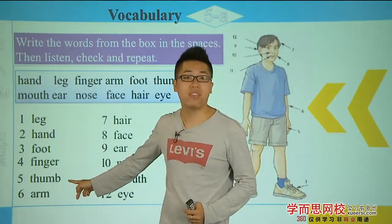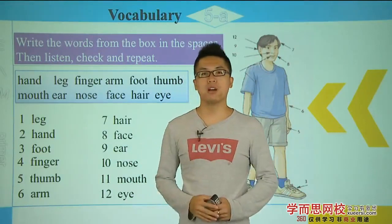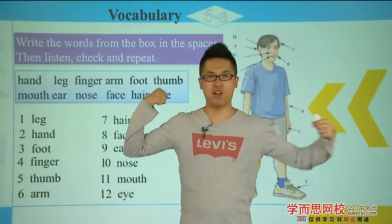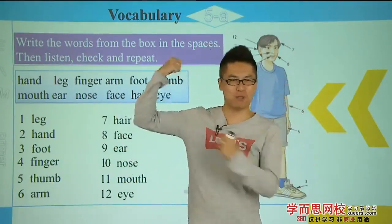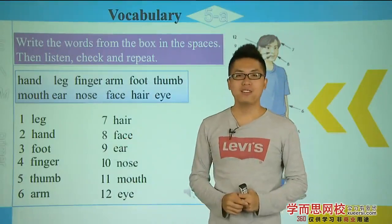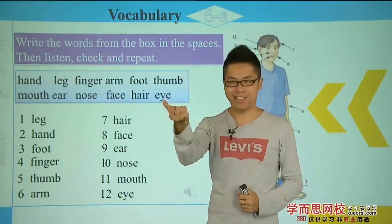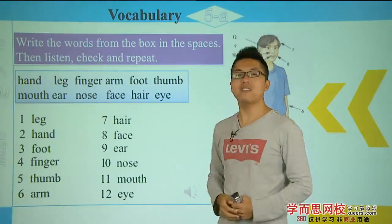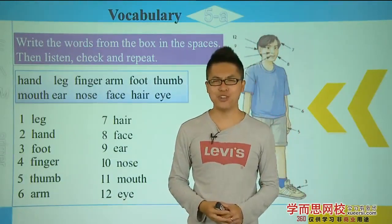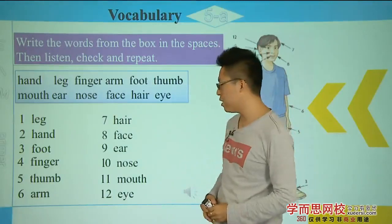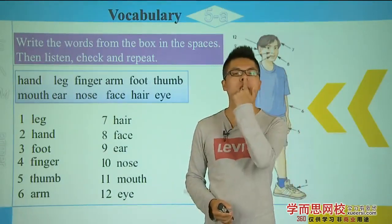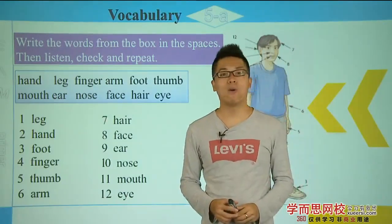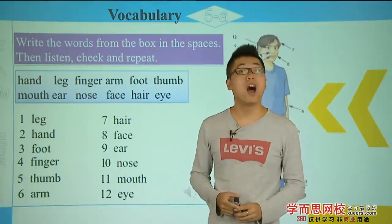Six: arm — show me your muscles! Seven: hair — show me your hair. Eight: face — show me your face. Nine: ear — show me your left ear. Ten: nose — show me your nose. Eleven: mouth. Twelve: eye.